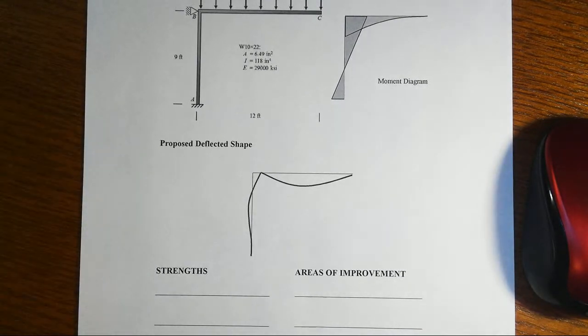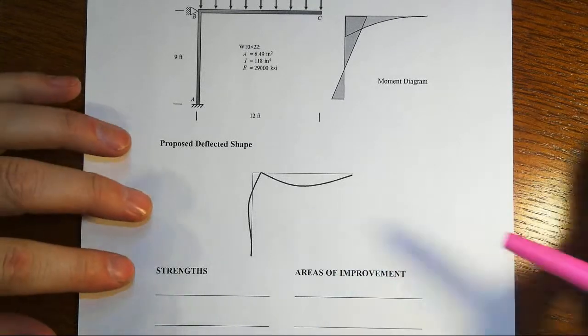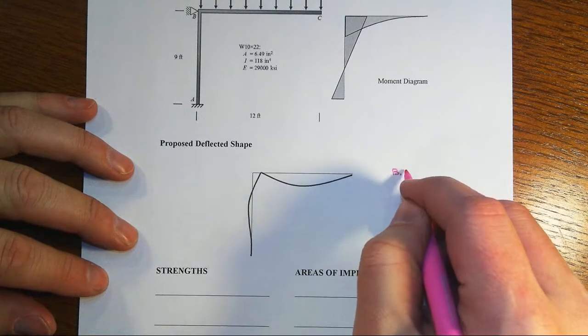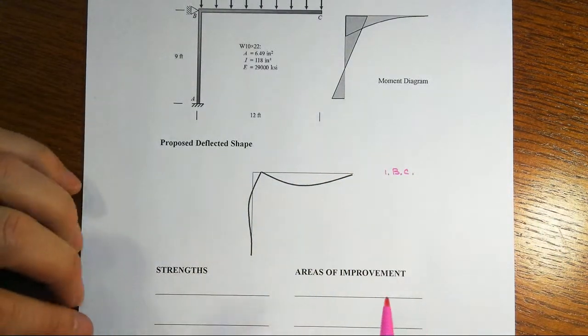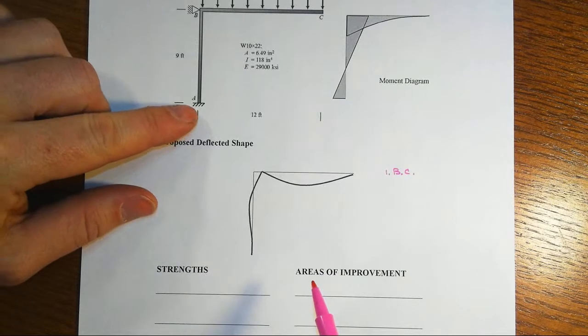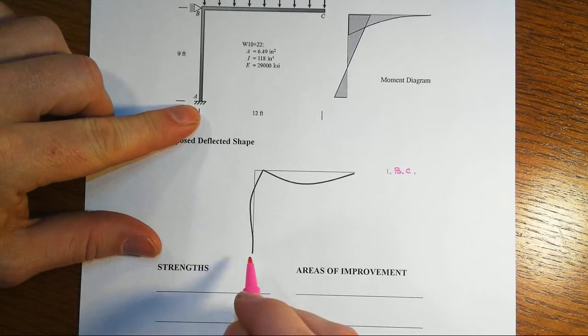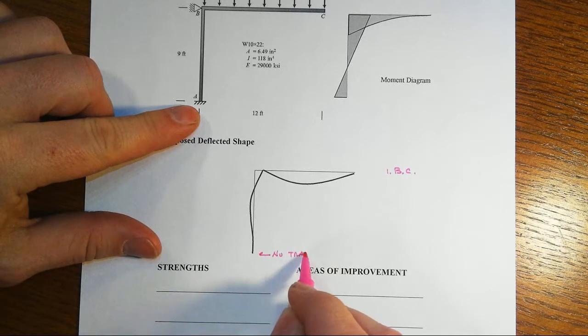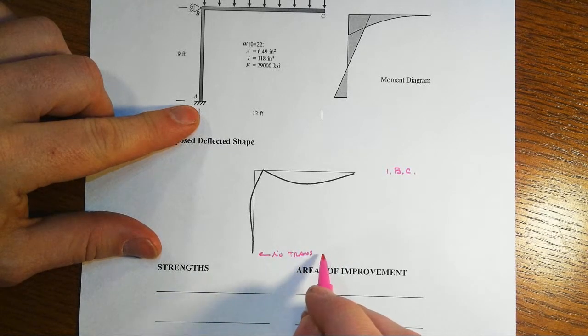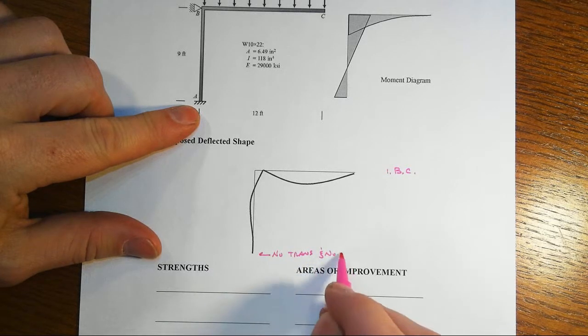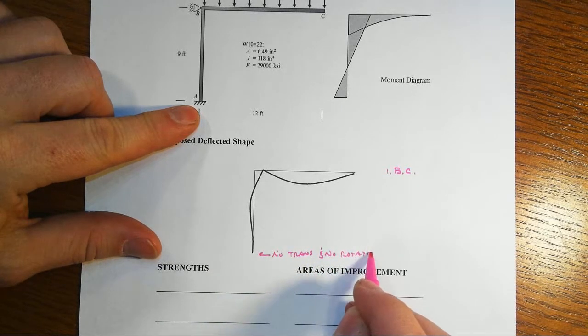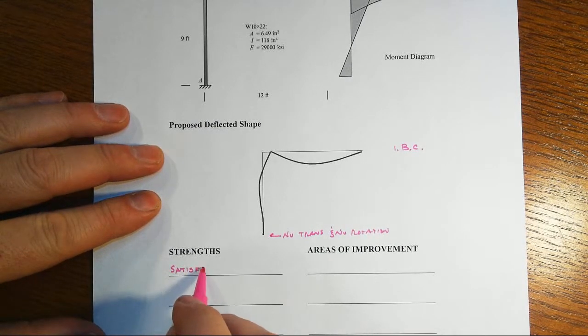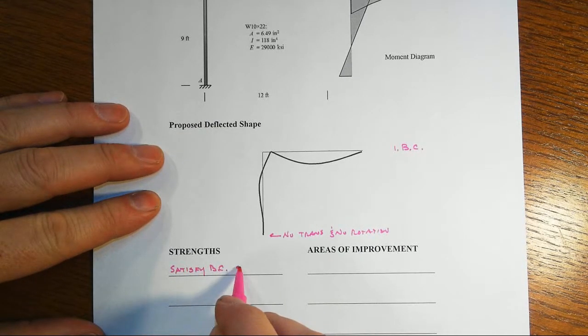As I would look at this situation I'd say let's run down the various requirements. One of them is we have to meet the boundary conditions. Boundary conditions in this case are that at A we've got a fixed end, so that means we have to have no translation either vertical or horizontal and no rotation. And we do, so okay, at least one strength - we satisfy the boundary conditions at A.